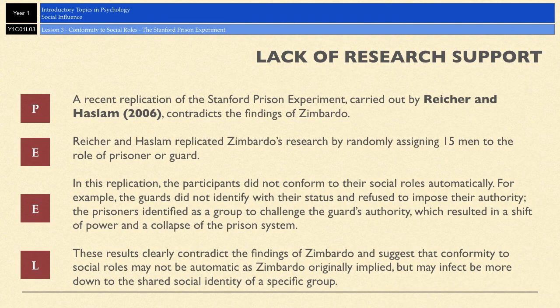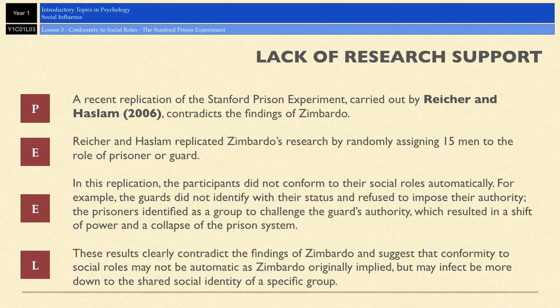A second evaluation point is a lack of research support. In 2006, Haslam and Reicher replicated Zimbardo's prison study. They found that participants didn't conform to their social roles automatically — the guards didn't identify with their role or status and refused to impose authority on the prisoners. The prisoners, on the other hand, identified as a group and challenged the guards' authority, resulting in a shift of power and a complete collapse of the prison system. This contradicts Zimbardo's findings, suggesting conformity doesn't happen automatically when given a role.